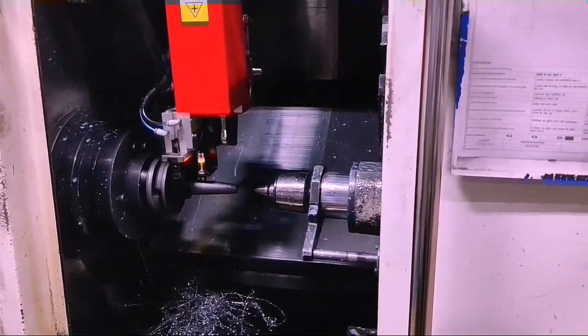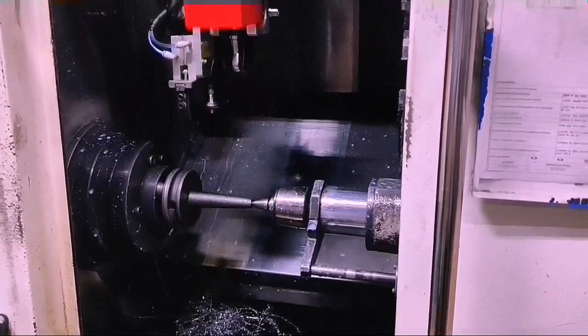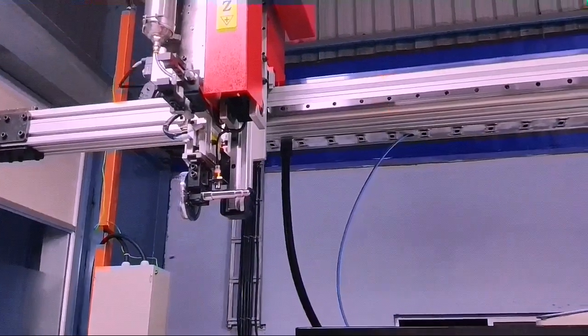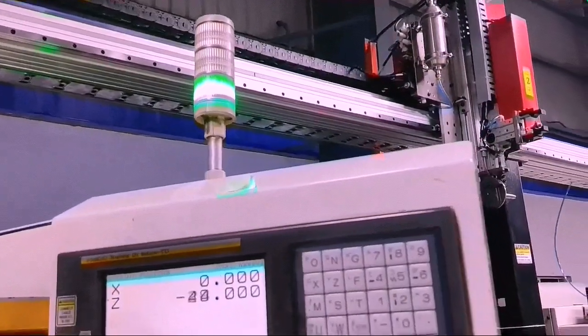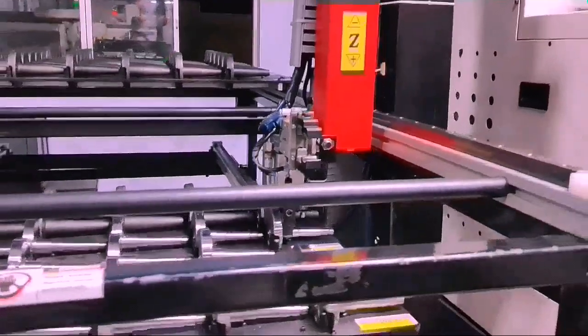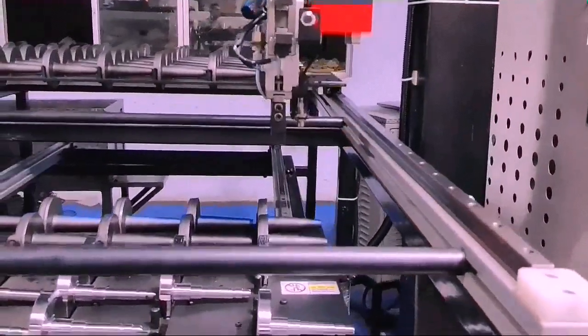Here the robot places the component into the chuck and the tailstock comes and supports the component at the other end. Whenever machining cycle times are over 45 seconds, one robot can tend to two machines thus reducing the capex cost per machine and improving the payback.